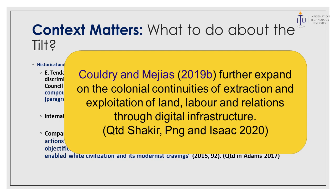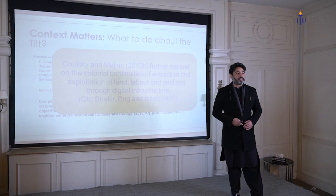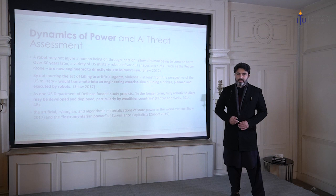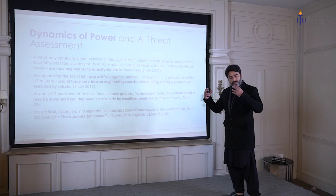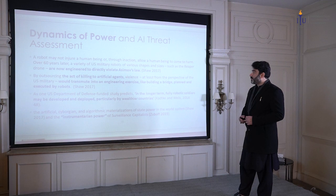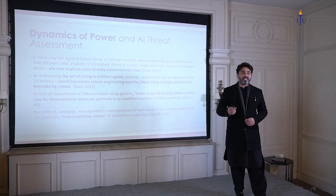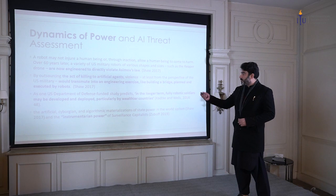A seminal paper by Shakir and others expands on the colonial continuities of extraction and exploitation of land, labor and relations through digital infrastructure. This continuity is very important and has to be understood. I read a very interesting paper on robot wars which gives valuable information to juxtapose with our discussion on AI ethics — for instance, how Asimov's law is now abandoned. The first law states that a robot must not harm a human being, and that has been sort of forgotten.